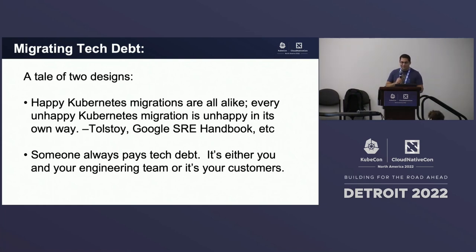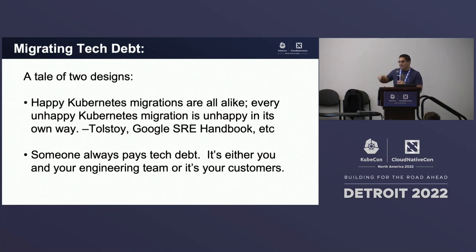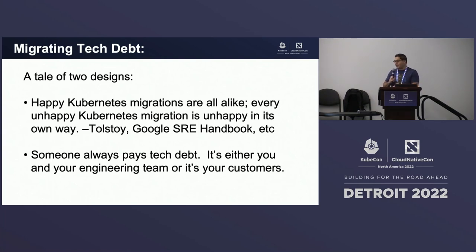As Tolstoy — or Liz Fong-Jones from Google SRE — said: happy Kubernetes migrations are all alike. You take your time, think about what you're going to do, become an expert in dev, scale up in dev, pay back all your enterprise tech debt, and make the argument to business and development leaders. Unhappy migrations are all peculiar because there are things people say can't change for the cloud-native world — they don't realize that if you don't pay back your tech debt, your customers will. You can't just migrate, change nothing, and expect everything to work well.